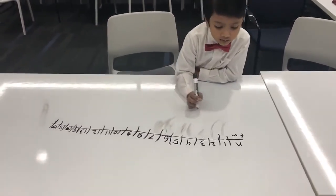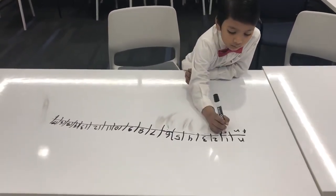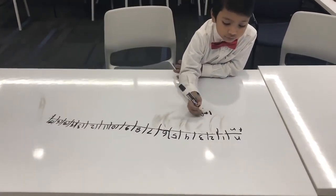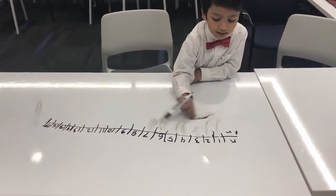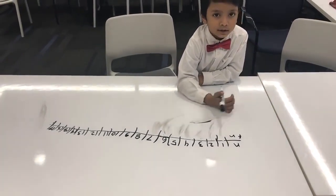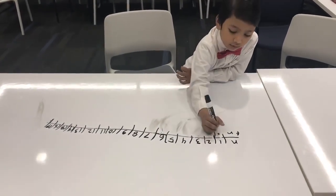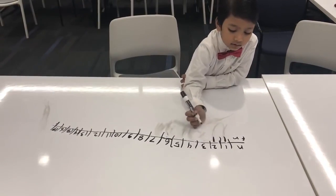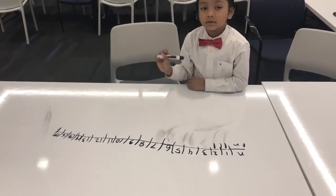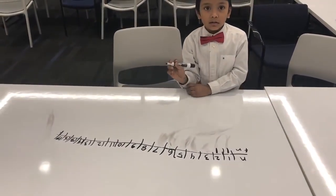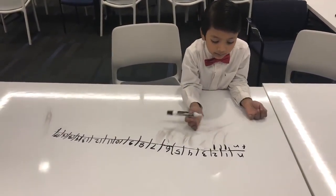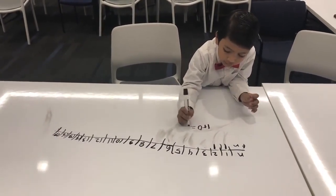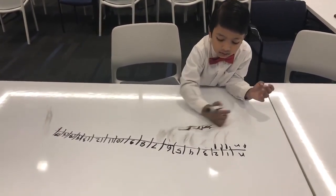The first one is 1 because 1 plus 0 equals 1. Usually, I know there is an F(0). So 2 is also 1 because it's added by the previous numbers, 1 plus 0, which is 1.